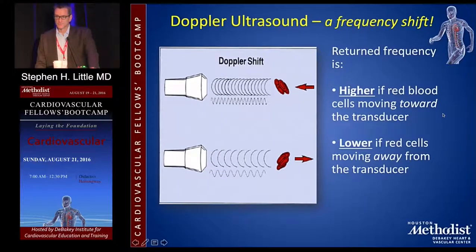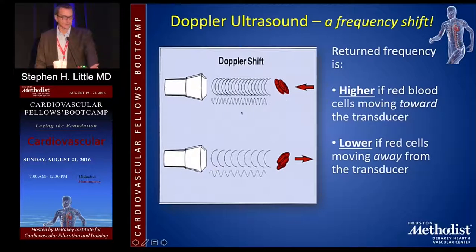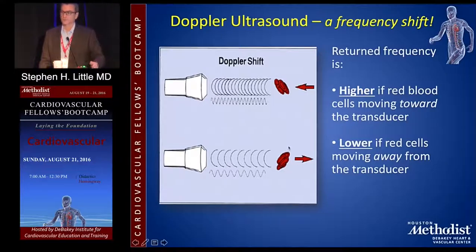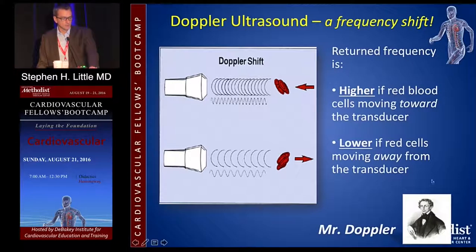Frequency shift is really very important to the concept of Doppler. The probe sends off a wave at a predetermined frequency. If the frequency that bounces back is higher — shifted higher than what left the probe — that indicates the target is moving towards the probe. Red blood cells moving towards the probe cause a frequency shift higher; red blood cells moving away cause a frequency shift lower. This concept of frequency shifting is the basic premise for determining the direction and velocity of blood flow. This is credited to Christian Doppler — so Doppler should always be capitalized, even in an EMR.